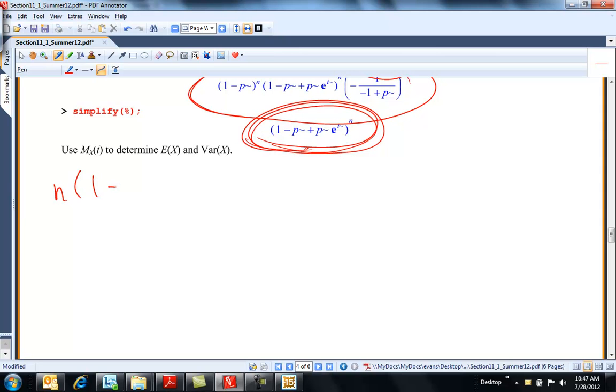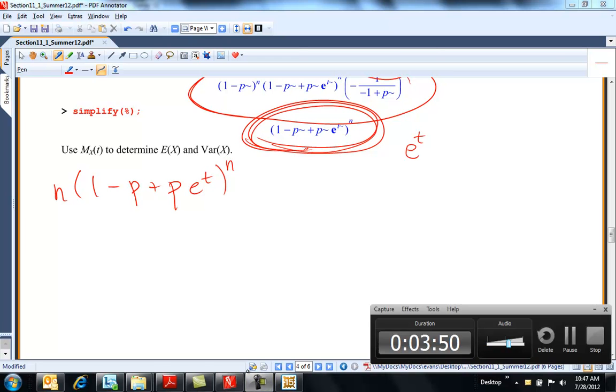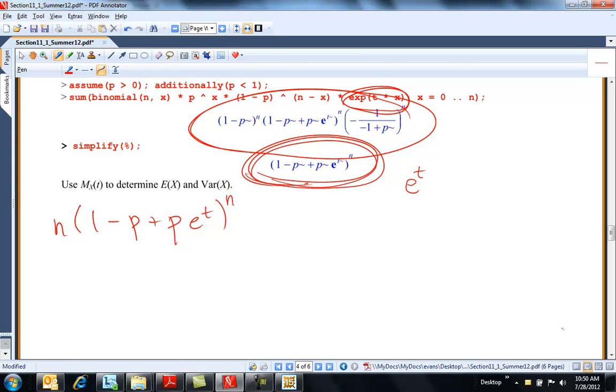And if we want to find its mean and variance, we take the first derivative with respect to T. So this would be N, 1 minus P, plus P, e to the T, to the N. I'm doing it with respect to T, so that's just the derivative of the inside. Okay, so I have a mistake. Maybe I should take calculus again. I'm not thinking right.